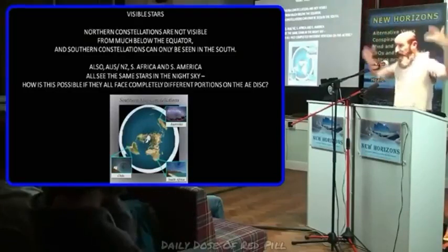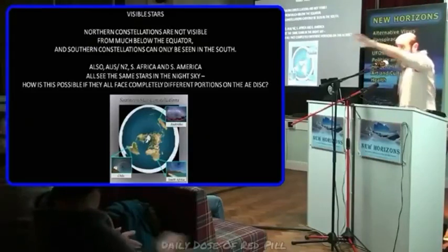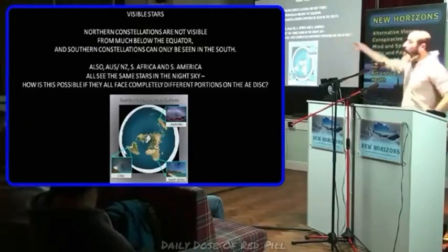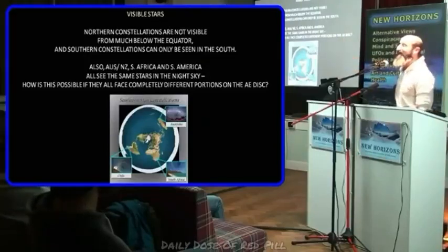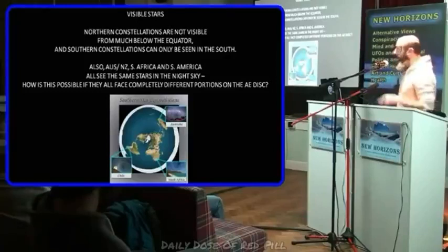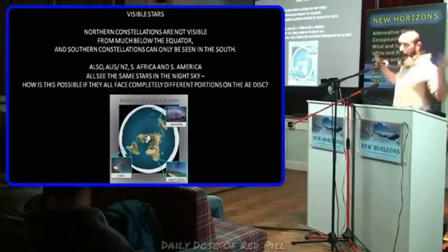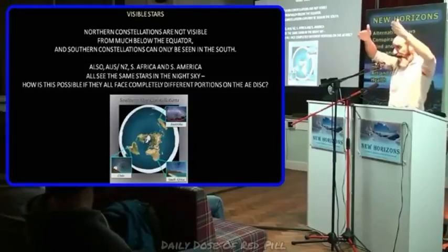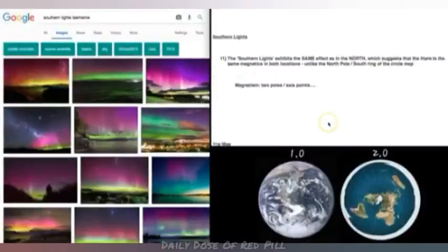And the other thing is, because it's a globe projection, you've got South America, South Africa, and Australia and New Zealand all facing completely different directions. They're all facing south, but they're all facing completely different directions. So although they don't have night time at the same time, at least two of them do. How come they can all look up south, due south, and see Sigma Octantis? It wouldn't be possible if the Earth is set up like that. And so yeah, two axis points.